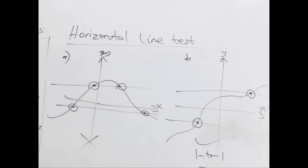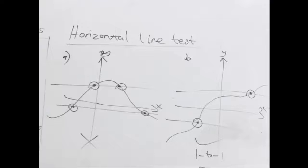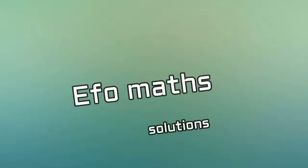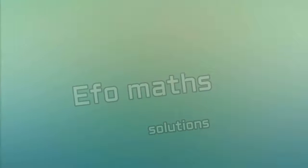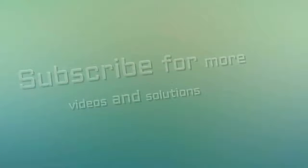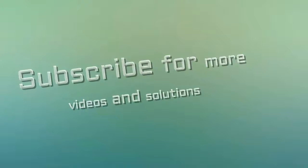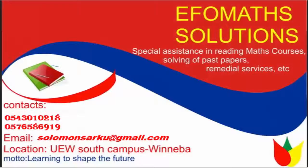These are the two ways we can differentiate whether a function exists in a graph or not, and whether that function is one-to-one or not. This is just a brief introductory aspect of calculus. I'll see you next time.